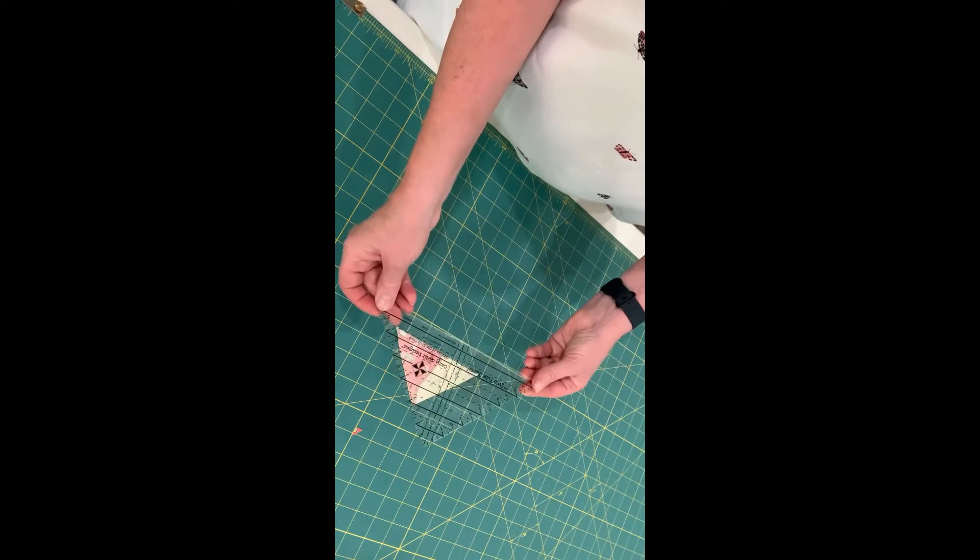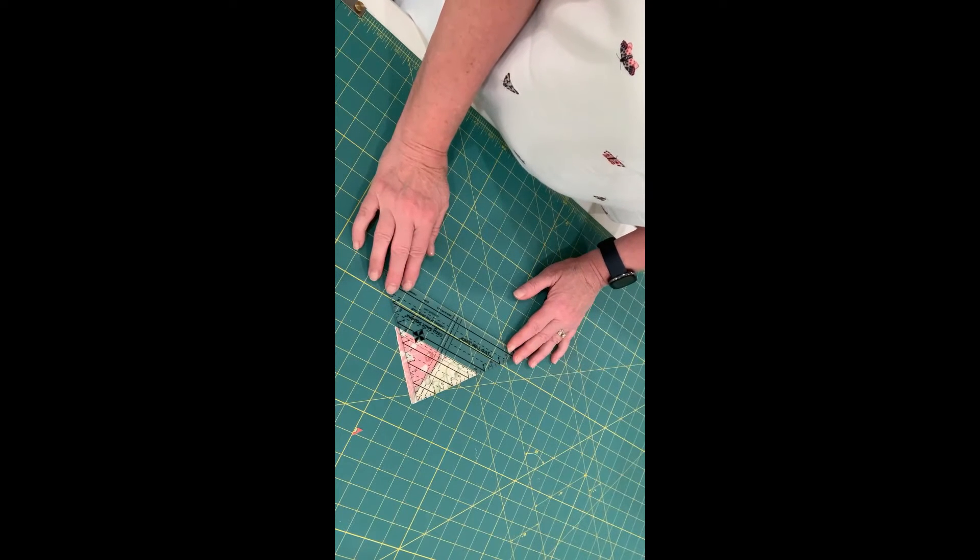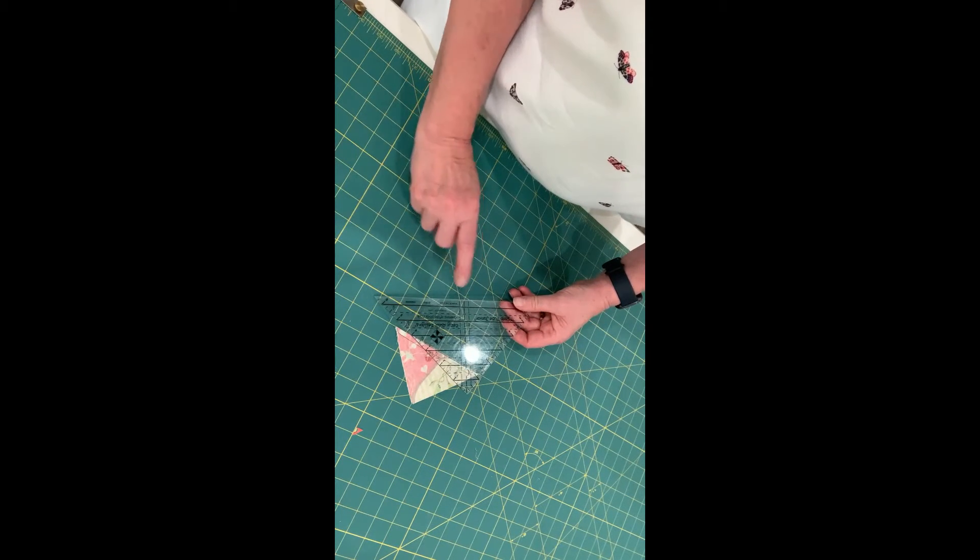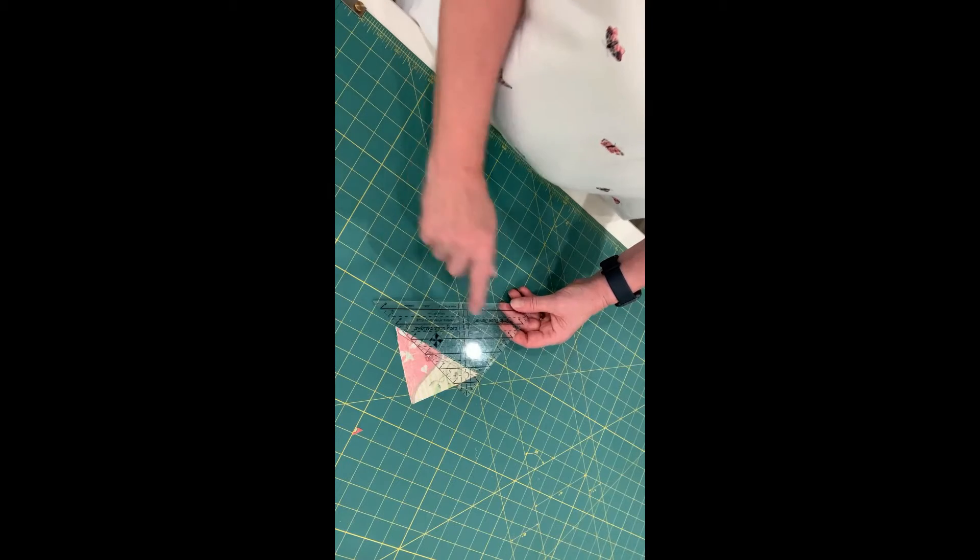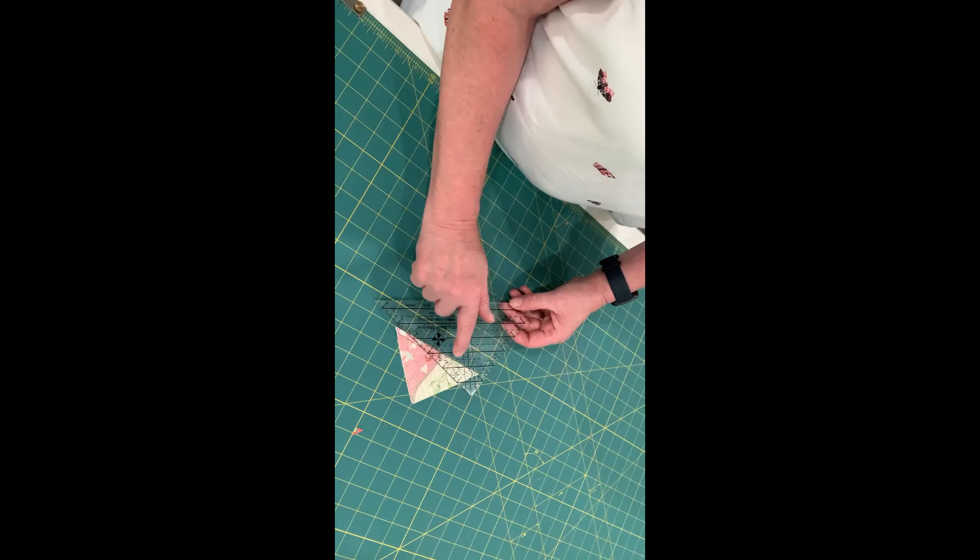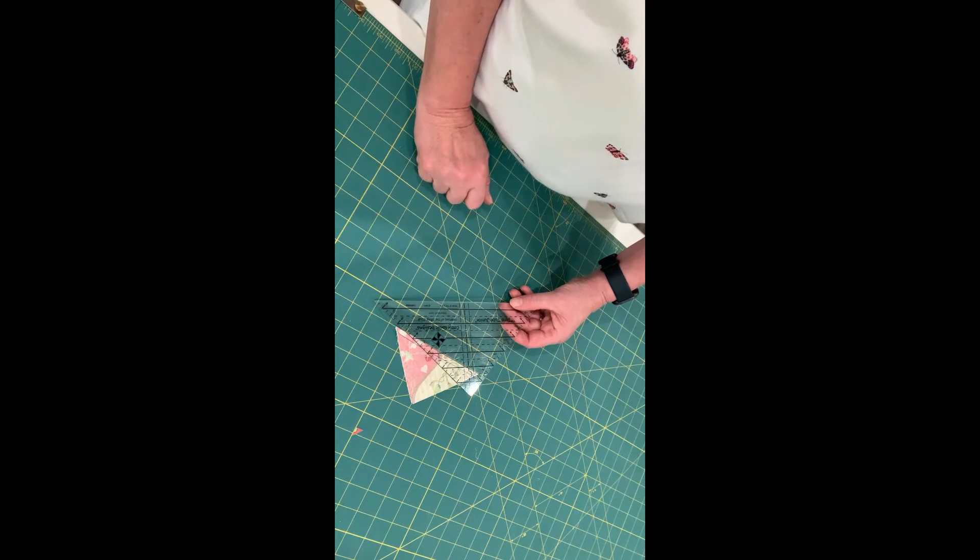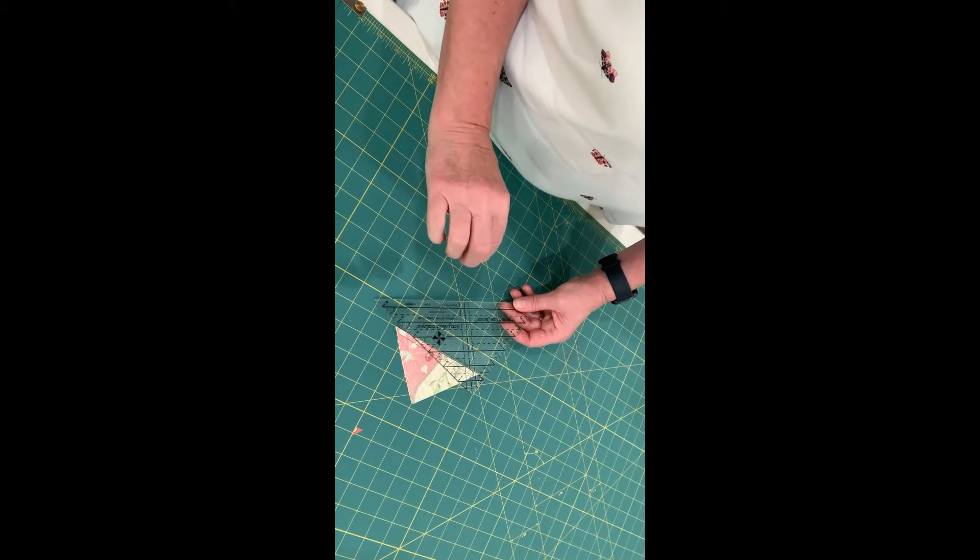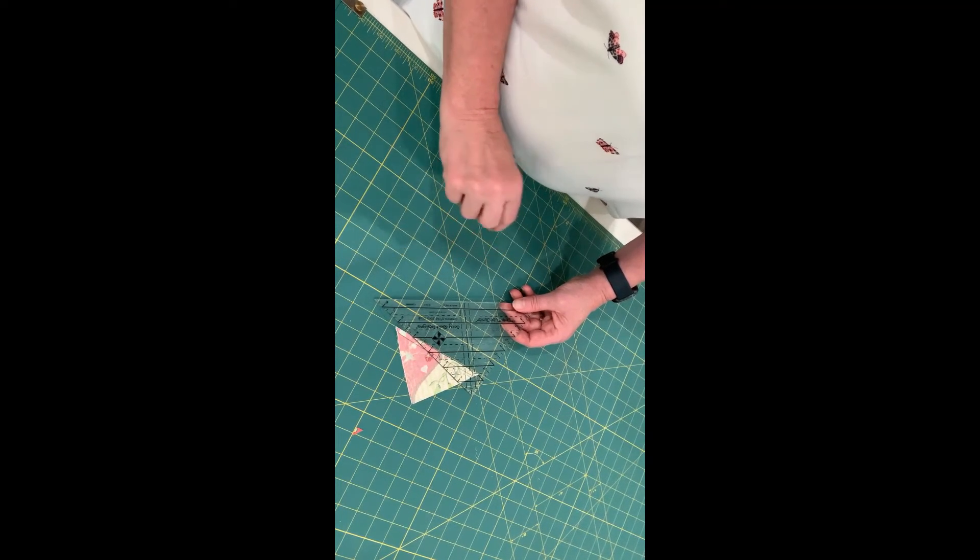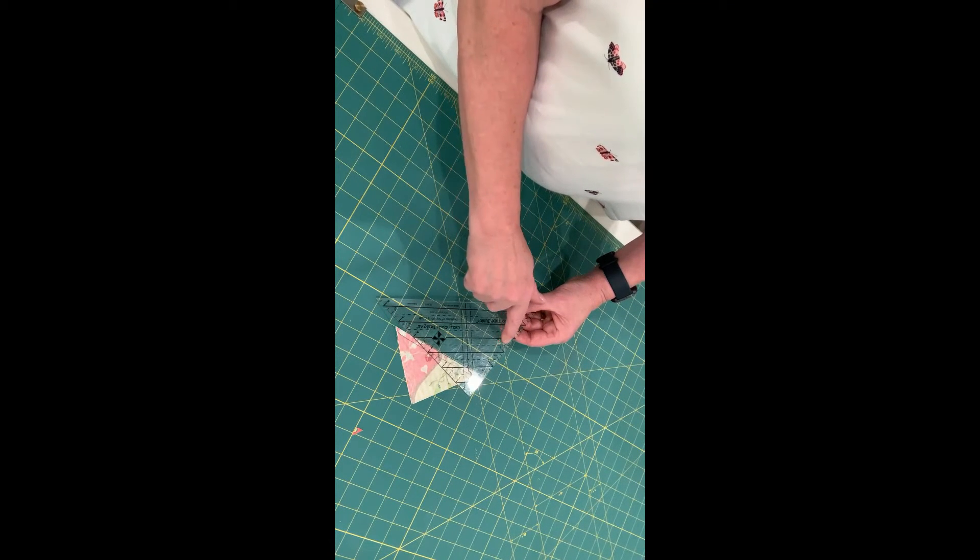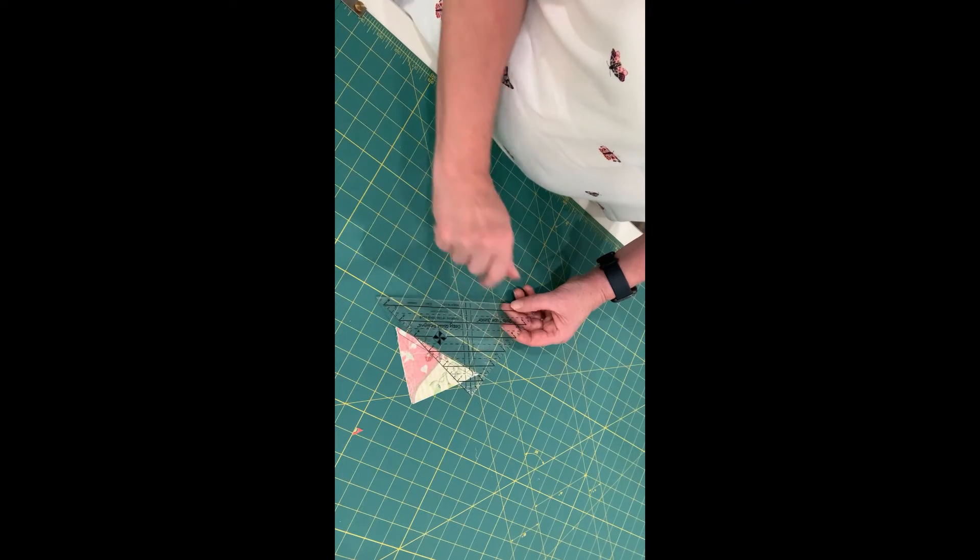So I'm going to trim using this ruler, and this is a ruler put out by Cozy Quilt Designs. It's called the Strip Tube Junior, and the ruler has a bunch of different markings, but when you're doing the trimming of triangle squares, you use the horizontal line. So the solid line is for the inch, and the dotted line is for the 1⁄2 inch. Now because we started out with 3 7⁄8, the unfinished size of this block will be 3 1⁄2 inches.